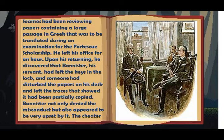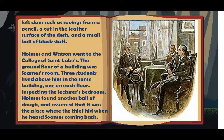He left his office for an hour. Upon his returning, he discovered that Bannister, his servant, had left the keys in the lock, and someone had disturbed the papers on his desk and left traces showing it had been partially copied. Bannister not only denied the misconduct, but also appeared to be very upset by it. The cheater left clues such as shavings from a pencil, a cut in the leather surface of the desk, and a small ball of black stuff.